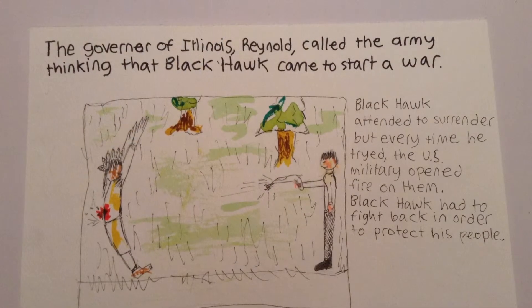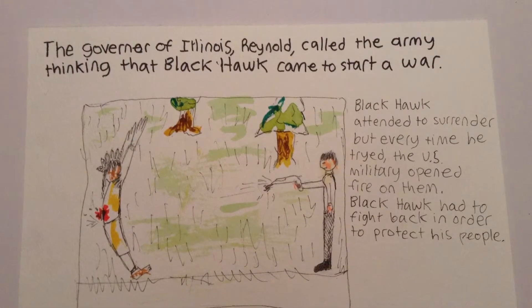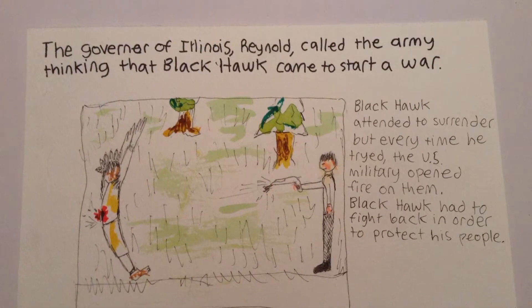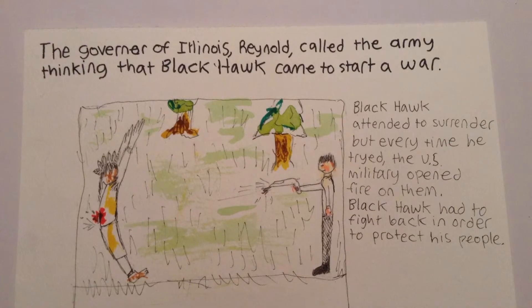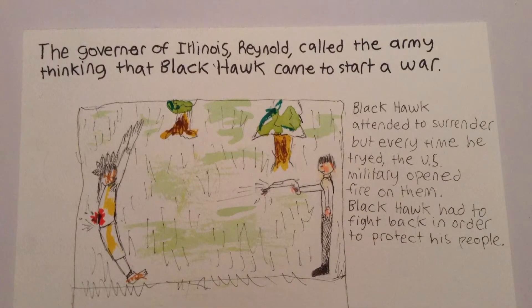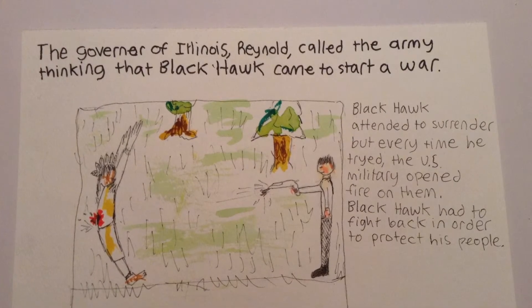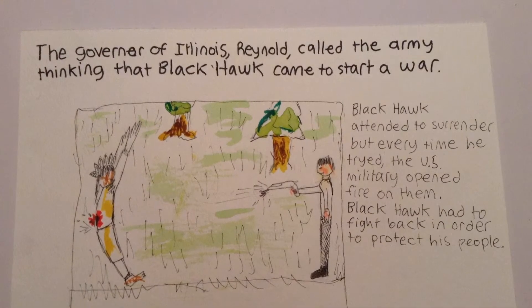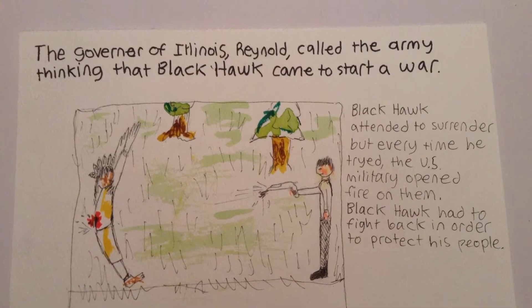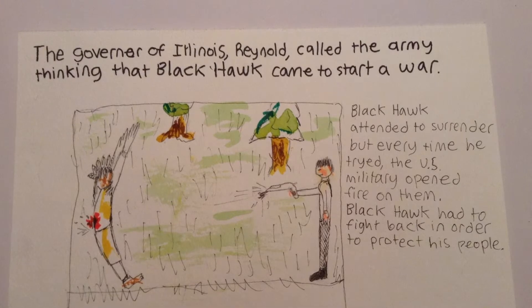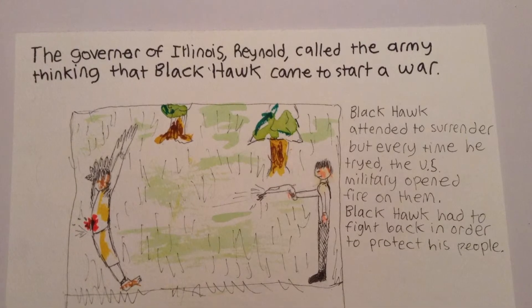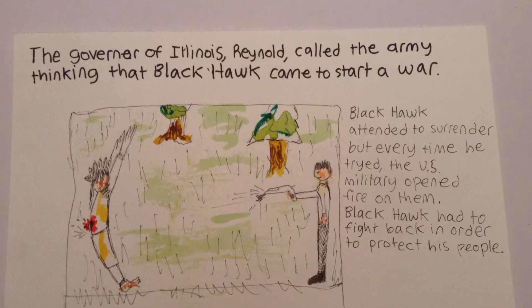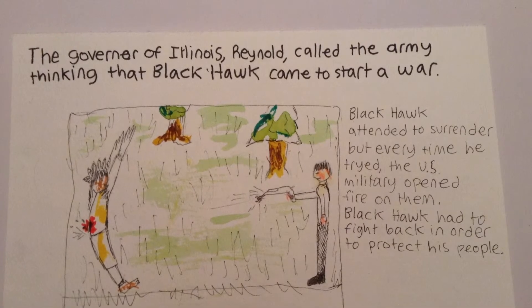The Governor of Illinois, Reynold, called the army thinking that Black Hawk came to start a war. Black Hawk intended to surrender, but every time he tried, the US militia opened fire on them. Black Hawk had to fight back in order to protect his people.